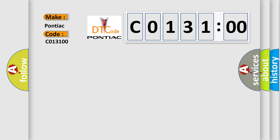The basic definition is O2 sensor positive current control circuit low bank 1 sensor. And now this is a short description of this DTC code.